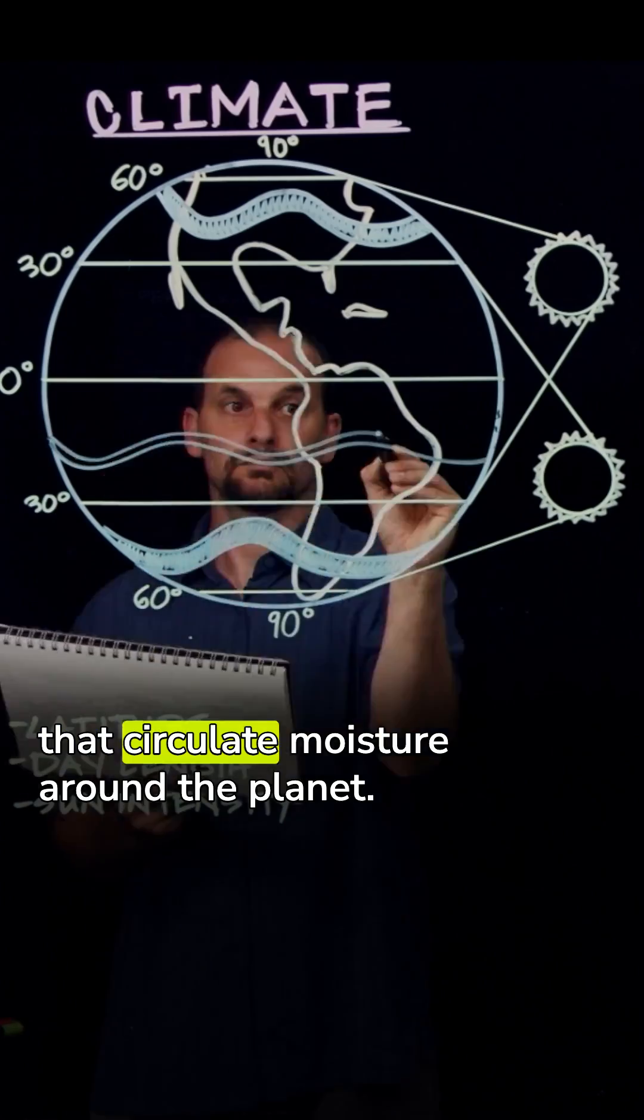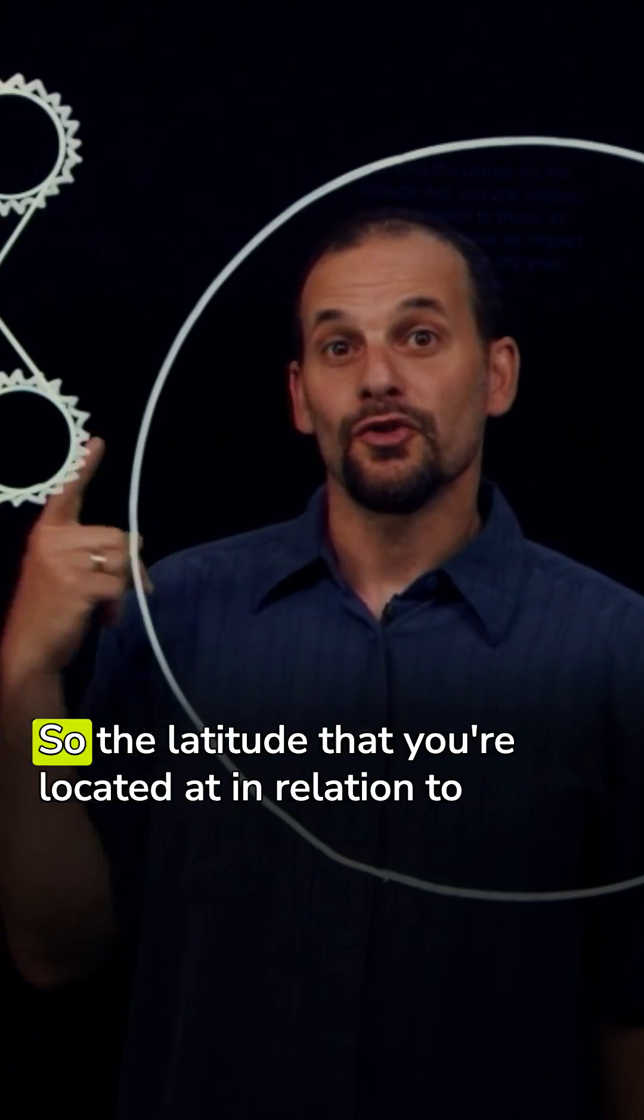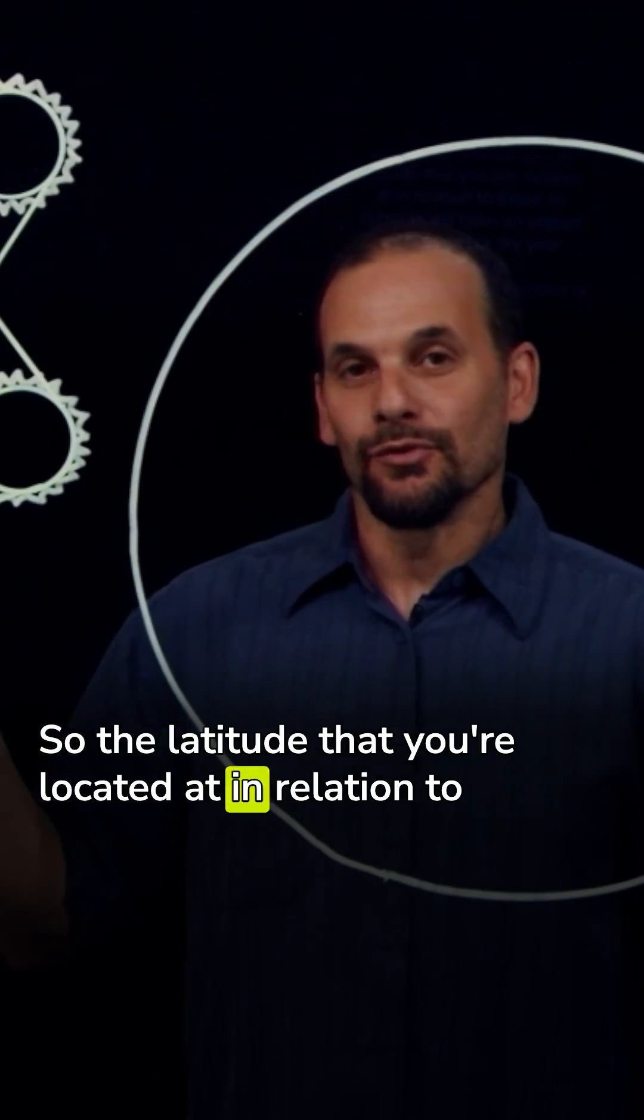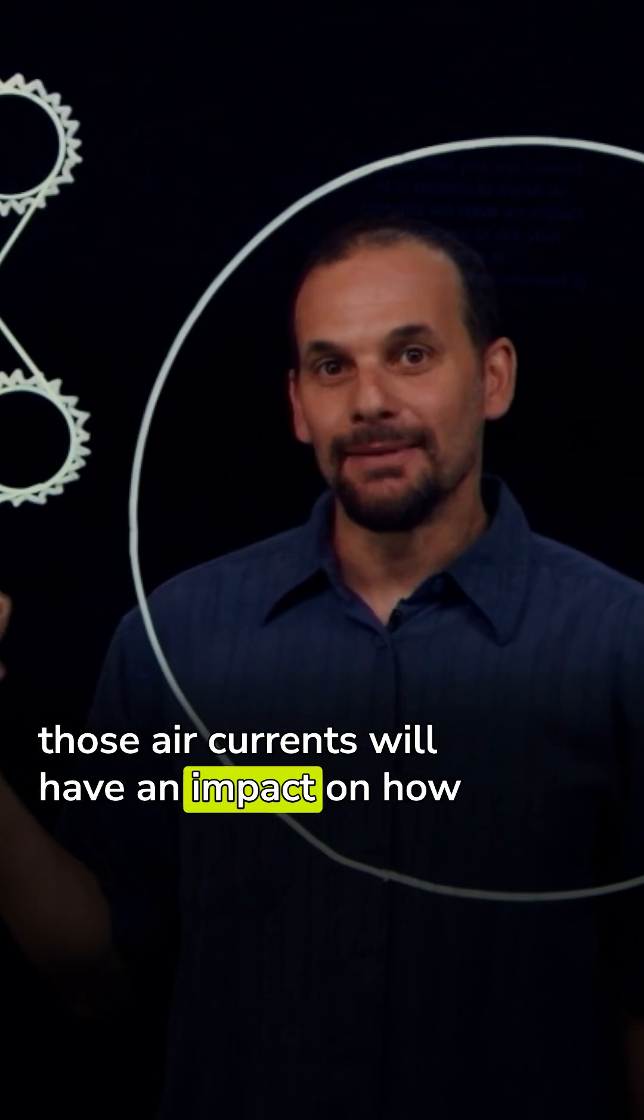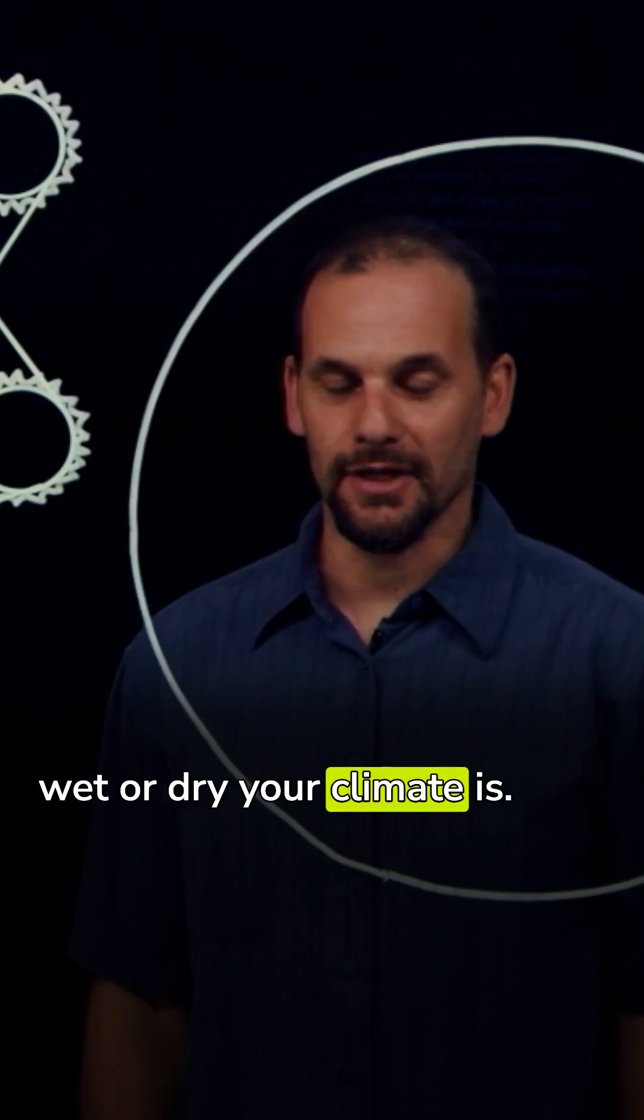There are air currents at different latitudes that circulate moisture around the planet. So the latitude that you're located at in relation to those air currents will have an impact on how wet or dry your climate is.